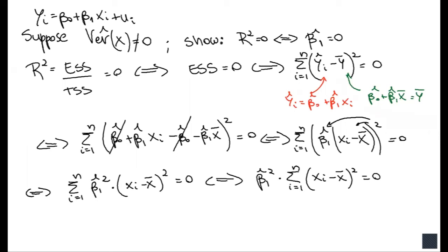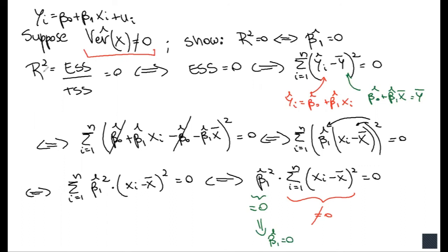Now notice: we were told that the variance of x in the sample is different from zero, which means the sum of squares of x is different from zero — so that sum cannot be zero. Therefore, for the equation to equal zero, it must be that β̂₁² = 0, which means β̂₁ = 0. R squared equals zero if and only if β̂₁ = 0, which makes sense: R squared measures how well x predicts y, and x is useless for predicting y when there is zero correlation, captured by β̂₁ = 0. This concludes the proof.